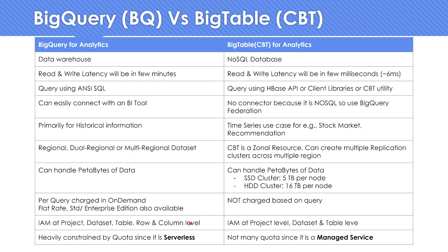When it comes to IAM, BigQuery offers a beautiful level of granularity. You can give access at a project level, at a particular dataset, at a particular table, and you can also use row-level security and column-level security using authorized views. Whereas with CBT, access control is only at a project level or at a table level — that's it.